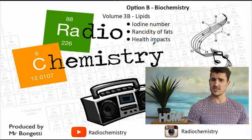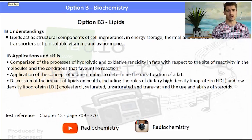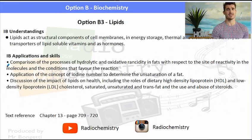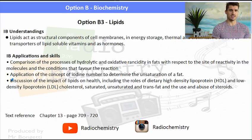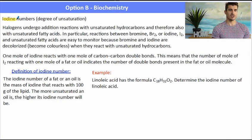Okay, volume 3B, lipids. We discuss iodine number, we talk about rancidity of fats, and then we also have a very quick discussion on some of the health impacts. So we're still on option B3 on lipids. Make sure you check out the understandings, the application and skills. They're the ones that are covered in this video.